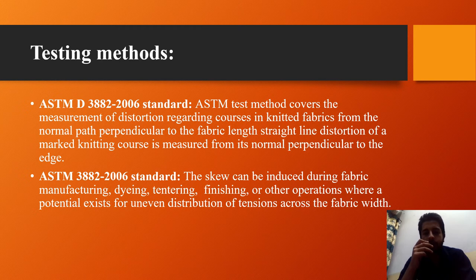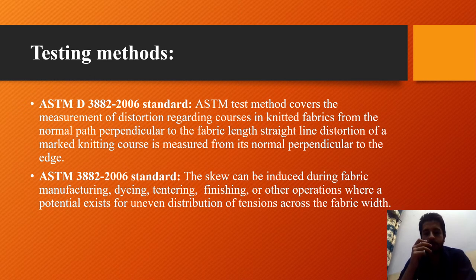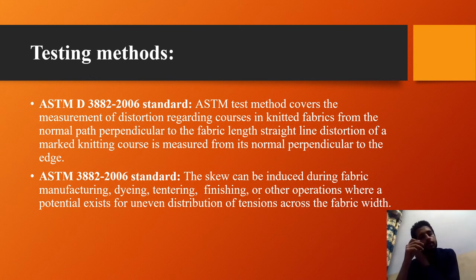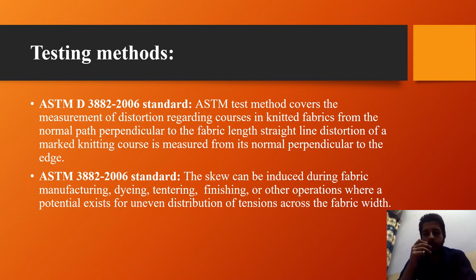The distance along the straight edge between the two edges is measured to the nearest 1 mm and recorded as the fabric width. The distance parallel to the selvages between the straight edge and the distinctive color yarn or marked line is measured to the nearest 1 mm and recorded as the skew distance, including the skew direction. ASTM D382 notes that skew can be induced during fabric manufacture, dyeing, tentering, finishing, or other operations where there is potential for uneven distortion of tension across the fabric width. It also comments that skew is visually more apparent in colored and patterned fabrics than in solid colors because the contrast makes the distortion more prominent.